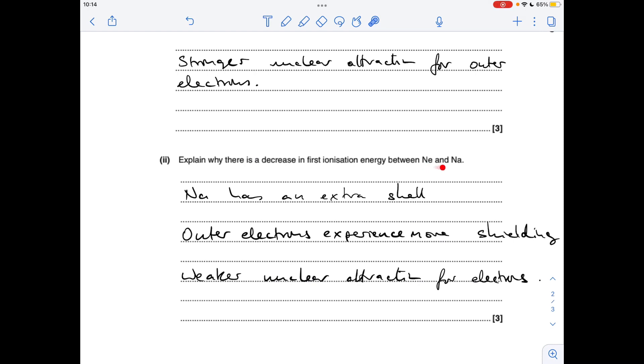So sodium's got an extra proton in its nucleus, but it's in the next period down from neon, so the important thing there is sodium has an extra shell. Therefore its outer electrons experience more shielding and therefore there's a weaker nuclear attraction for the electrons.